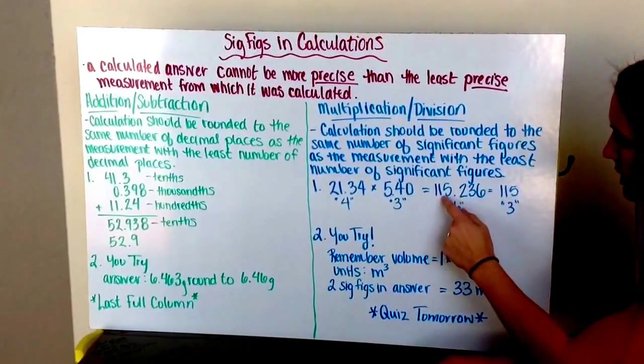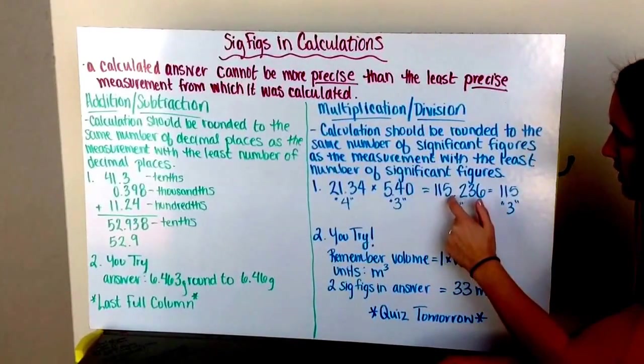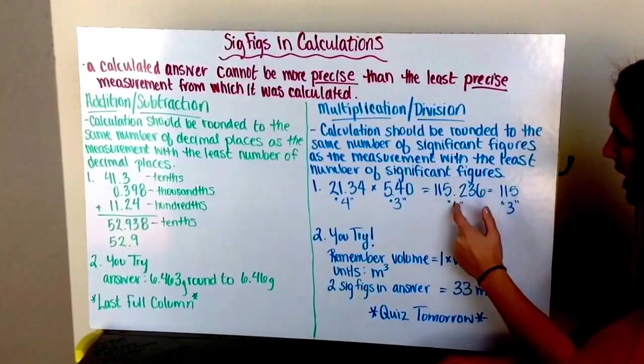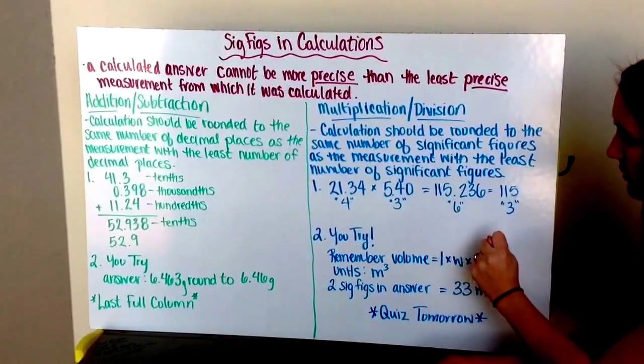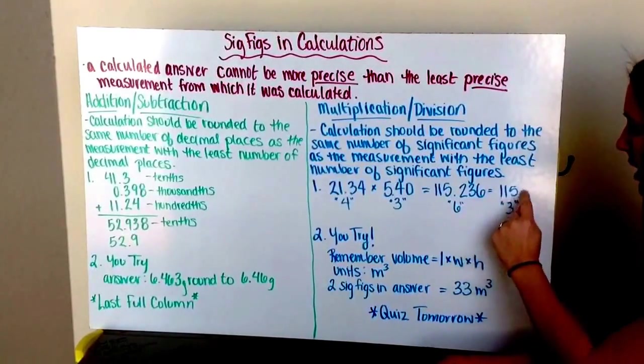So I need to round it to 1, 2, 3 significant figures. After my 5, my number is less than 5, so I round down, so I get 115.